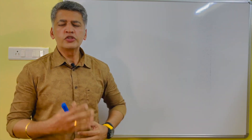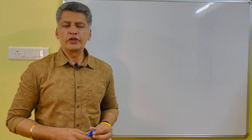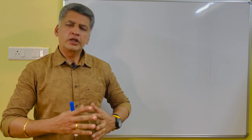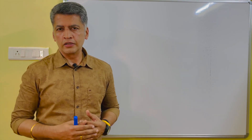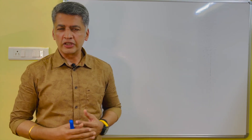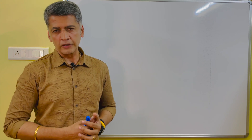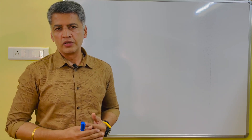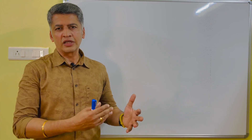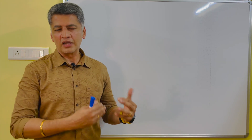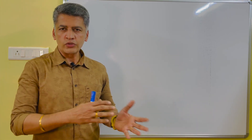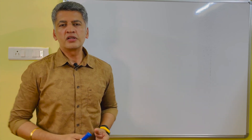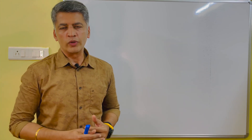Hi everyone. In this video, we are going to discuss about error reduction. There are two ways you can go for error reduction: one is the Venn diagram method and another one is syndrome word calculation. The Venn diagram method has some disadvantages, and that is why we are moving from Venn diagram to syndrome word calculation.